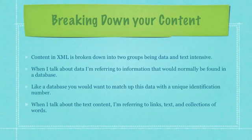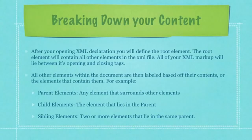Content in XML is broken down into two groups: data and text intensive. When I talk about data, I'm referring to information that would normally be found in a database. Like a database, you would want to match up this data with a unique identification number. When I talk about text content, I'm referring to links, text, and collections of words. After your opening XML declaration, you will define the root element. The root element will contain all other elements in the XML file. All of your XML markup will lie between its opening and closing tags. All other elements within the document are then labeled based off their contents or the elements that contain them. Parent elements are any element that surrounds other elements. Child elements are the elements that lie in the parent elements. And sibling elements are two or more elements that lie in the same parent element.